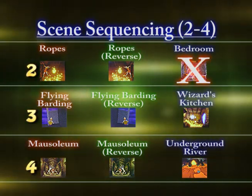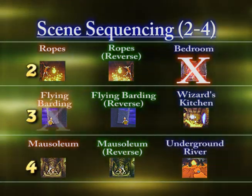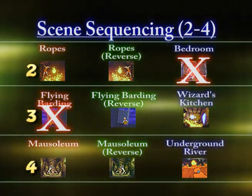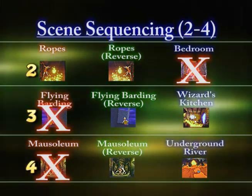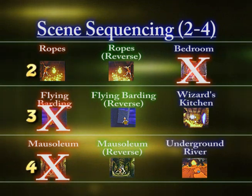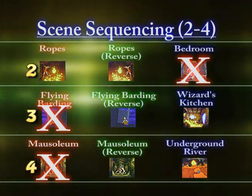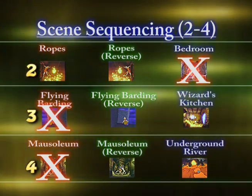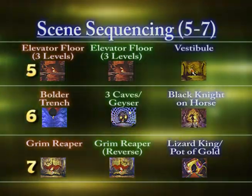Let's say it picks the bedroom. Once you finish the bedroom, it goes to row three and picks either flying barding, flying barding reverse, or Widge's kitchen. Then it goes to mausoleum reverse and the underground river — it picks one of those three. So it picks one from row two, then row three, then row four, all the way down through the game. As it plays a scene, it X's it off and will not play it again. It keeps X-ing off each played scene as it goes through all the different rows.